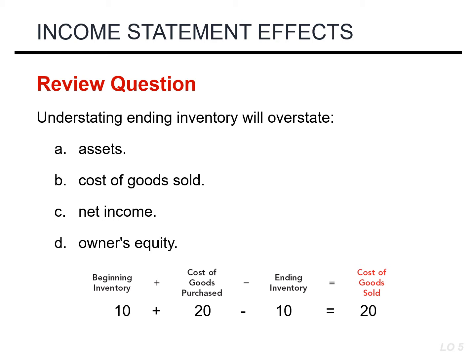Now, let's go ahead and understate the ending inventory. Beginning inventory remains the same at 10. There's no change in our purchases — that's going to remain at 20 — but our ending inventory is going to be understated, or lower. In this instance it's 5, which means our cost of goods sold is 25. Our cost of goods sold is overstated. If our cost of goods sold is overstated, then our net income will be understated. So the correct answer here is B: if you understate your ending inventory, you will overstate cost of goods sold.